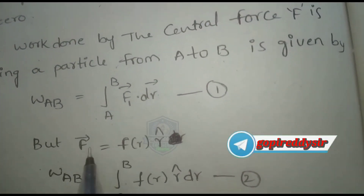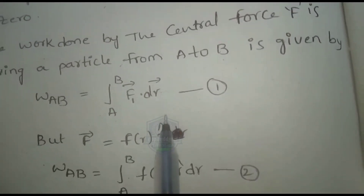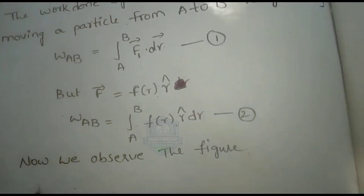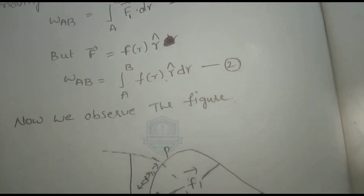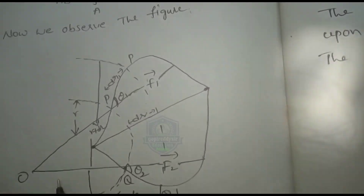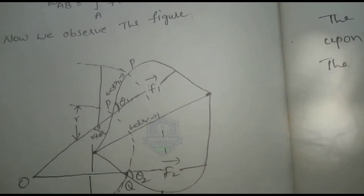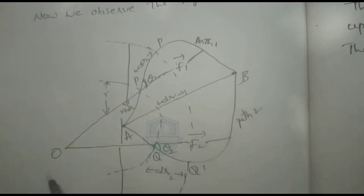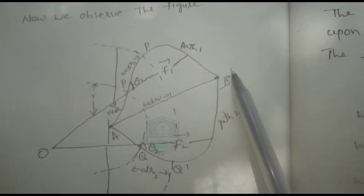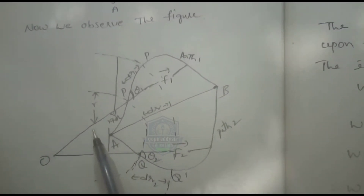F bar is given by F of r times r cap. Now we observe the figure. We have a curve here and we identify two equilibrium points, A and B.